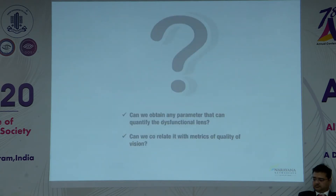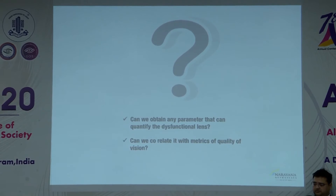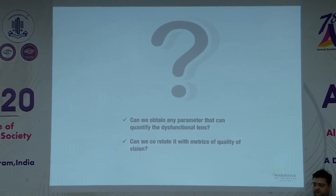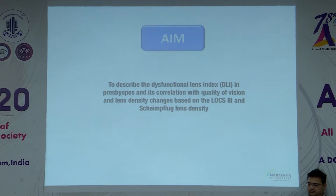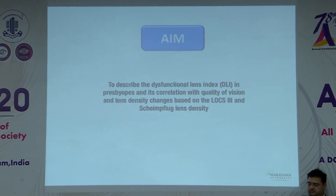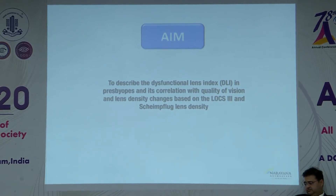The research question is: can we obtain a parameter that can quantify the dysfunctional lens and correlate it with metrics of quality of vision? The aim is to describe the dysfunctional lens index in presbyopes and its correlation with quality of vision and lens density changes based on LOCS3 and Scheimpflug lens density.